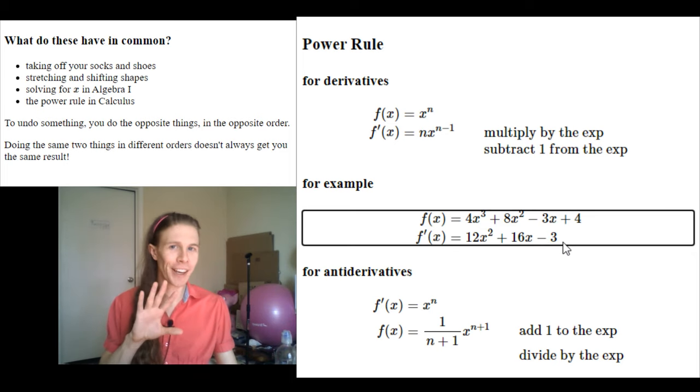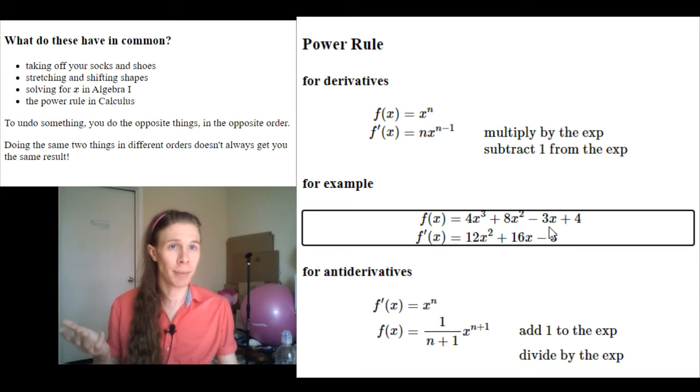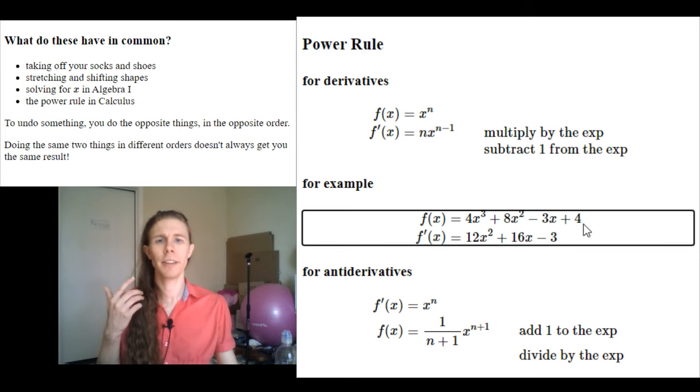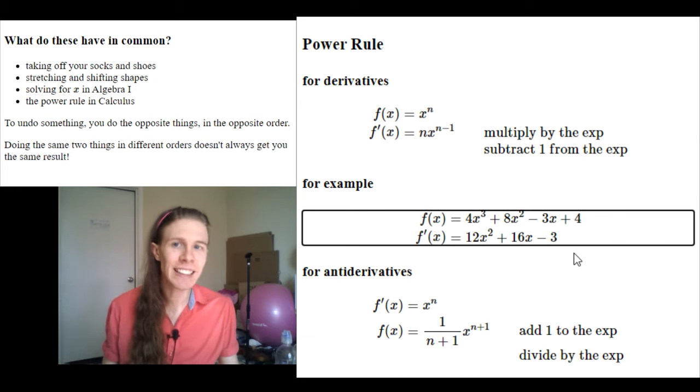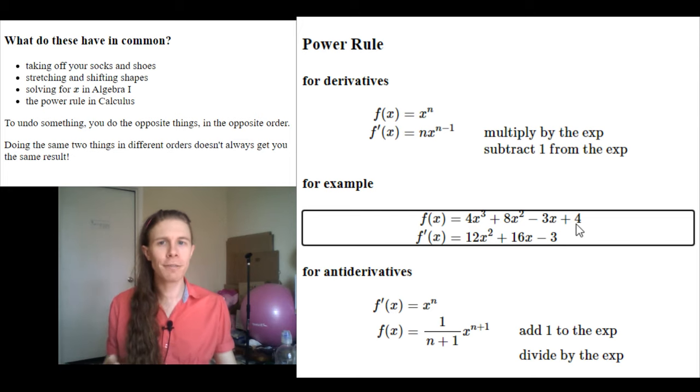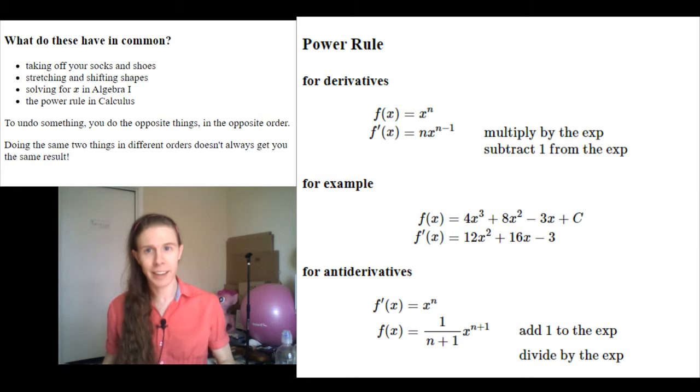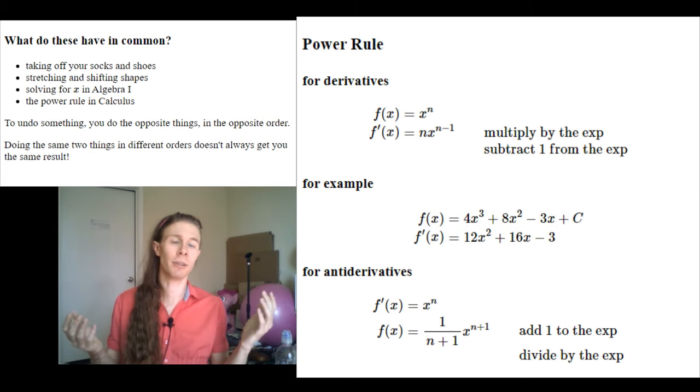This has the invisible x to the 0. So I add 1 to the 0, and get 1. And then divide by that 1, doesn't change it, I get minus 3x. This plus 4 is the one part that's weird. And that one part that's weird is weird because it got completely obliterated by taking the derivative. So the information that 4 was here is kind of lost when taking the derivative. And so when taking the anti-derivative, instead of getting plus 4 here, we get plus C. Any constant could have been there, and the derivative would have been the same.